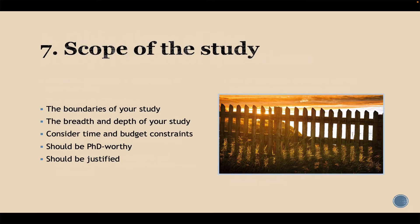Besides objectives and research questions, the next thing in chapter 1 is the scope of the study. The scope basically entails the boundaries within which your study will be conducted — it implies the breadth and depth of your study. While specifying the scope, consider constraints such as time and budget. Your PhD program is time-limited, perhaps three to five years, so your scope should be PhD-worthy: not too narrow, but also not so broad that you'll be unable to complete it. You should also justify why you selected that particular scope.